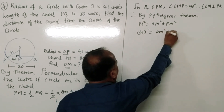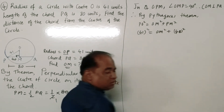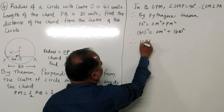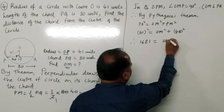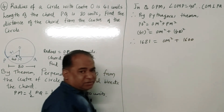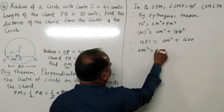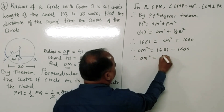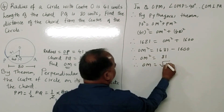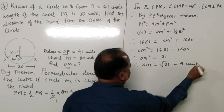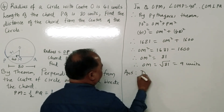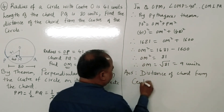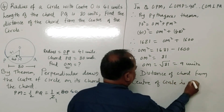41² = 1681 and 40² = 1600. Therefore OM² = 1681 − 1600 = 81, so OM = √81 = 9 units. The distance of the chord from the center of the circle is 9 units.